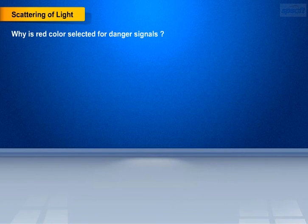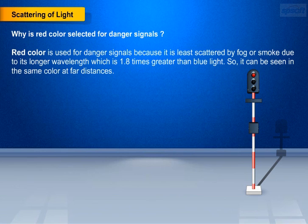Why is red color selected for danger signals? Red color is used for danger signals because it is least scattered by fog or smoke due to its longer wavelength, which is 1.8 times greater than blue light. So it can be seen in the same color at far distances.